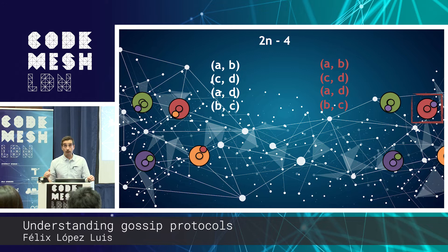So wouldn't it be better if every node could have an optimal path for sending messages? That's one of the things we can do with Gossip Protocols — we can build overlay networks. One example is Plumtree, which keeps a broadcast tree to send messages.